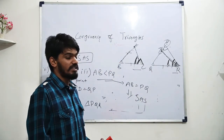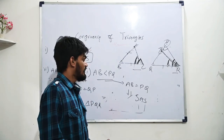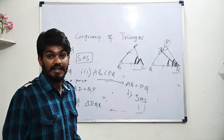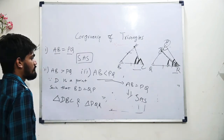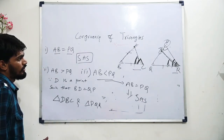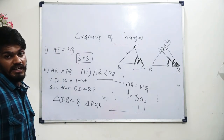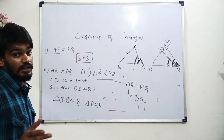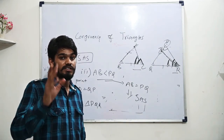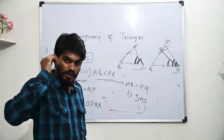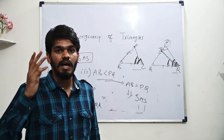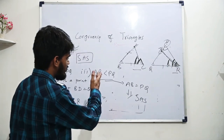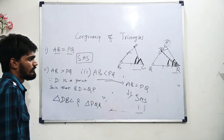So SAS was the axiom — Side Angle Side — and we have just proved a theorem: the ASA condition of congruency, which states that when two angles and the included side of one triangle are equal to the two angles and included side of another triangle, then they are congruent to each other. And here is the proof. Thank you.